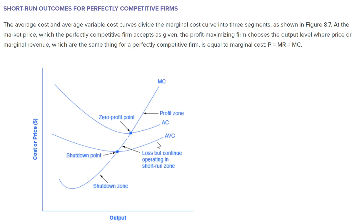Let's start first with average variable cost. The average variable cost is the cost as it fluctuates during production of output — as it fluctuates between the labor prices, the utility prices, the bills that are never really exactly the same. It is the average cost over a period of time that includes all of those moving expenses or moving costs. You come up with an average of those costs, and that is represented as your average variable cost — the average electric bill, the average utility bill, etc.